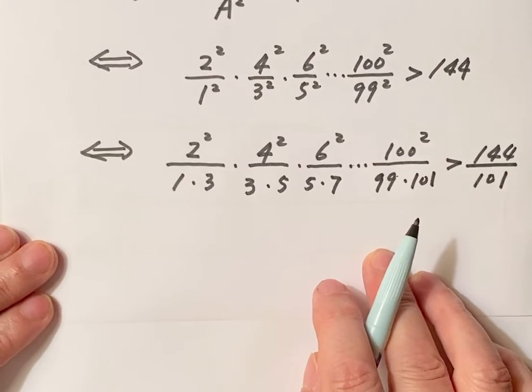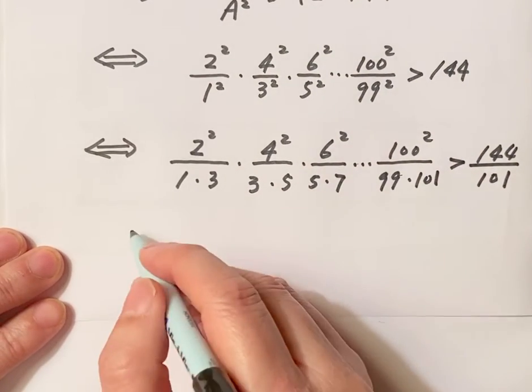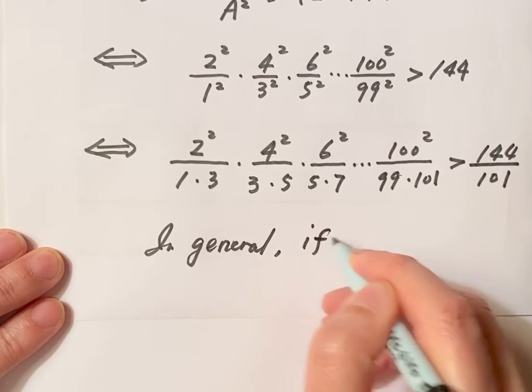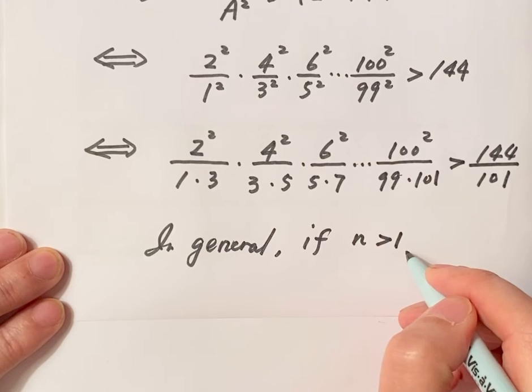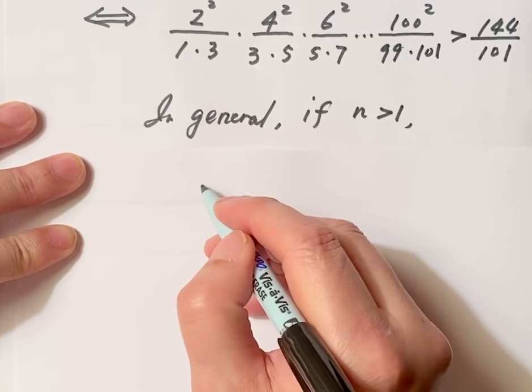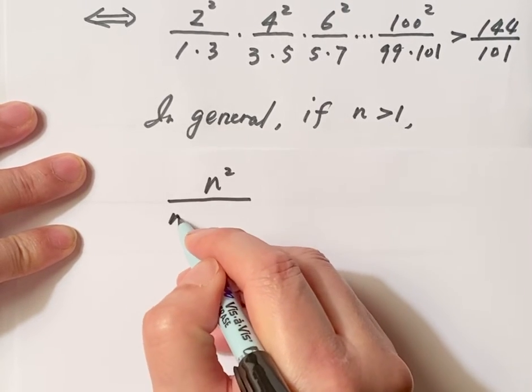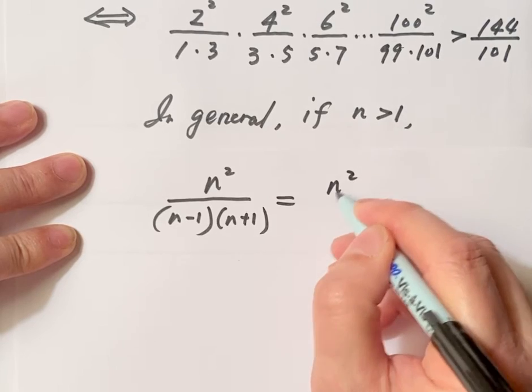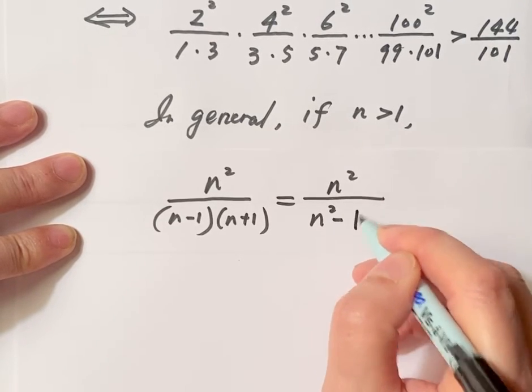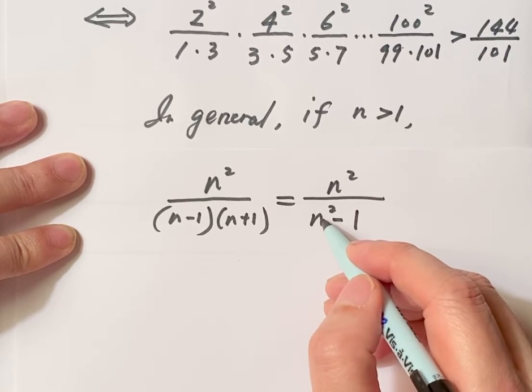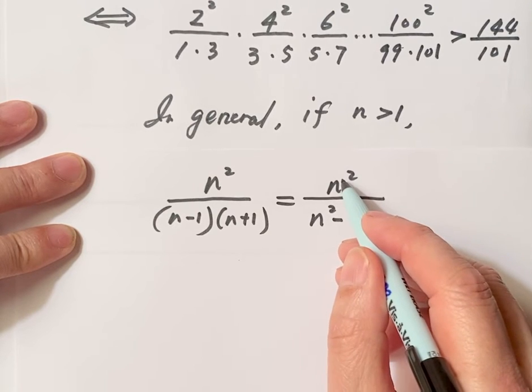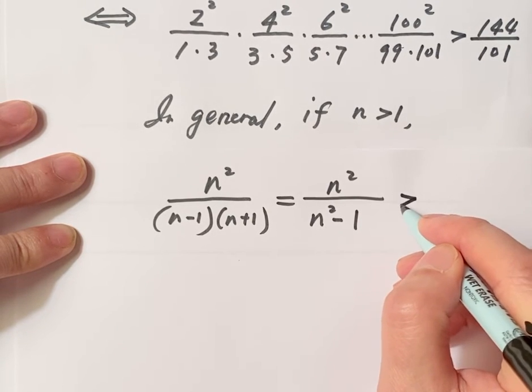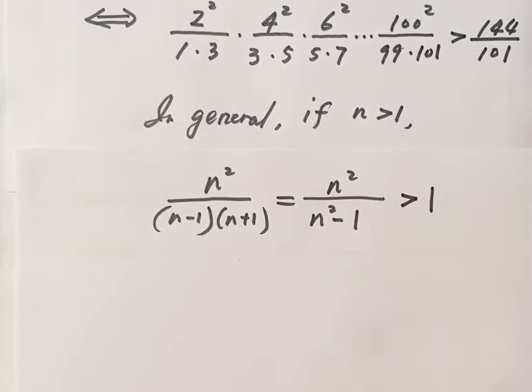In general, we have this result. If N is bigger than 1, we have this result: N squared over N minus 1 times N plus 1. What is this? This is N squared over N squared minus 1. Because N is bigger than 1, so N squared is bigger than 1. Denominator is positive. The numerator is also positive. The numerator is bigger than denominator, always. Therefore, this is bigger than 1.